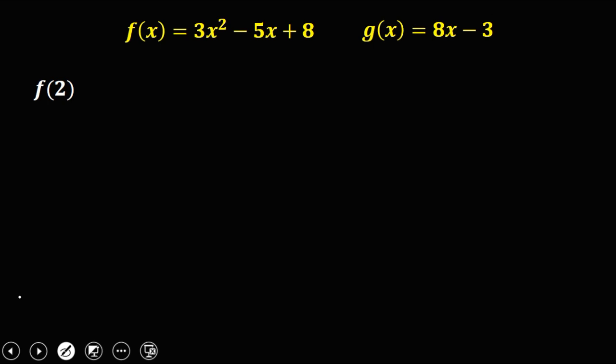So for f(2) we're going to use the f function, or the value of f function, which is 3x squared minus 5x plus 8. But our x is equal to 2, so just have to replace x.